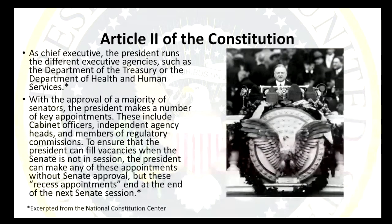One of the things that Article 2 says is that the president is the commander-in-chief of the military, and he also gets to choose people to lead the different departments of the government and can ask them for help. He gets to appoint agency heads to help him do his job. But they don't get to just appoint people without approval — Congress has to approve his appointments to the heads of these agencies.